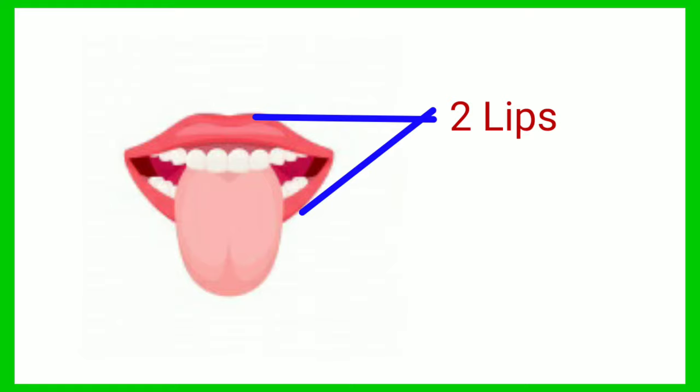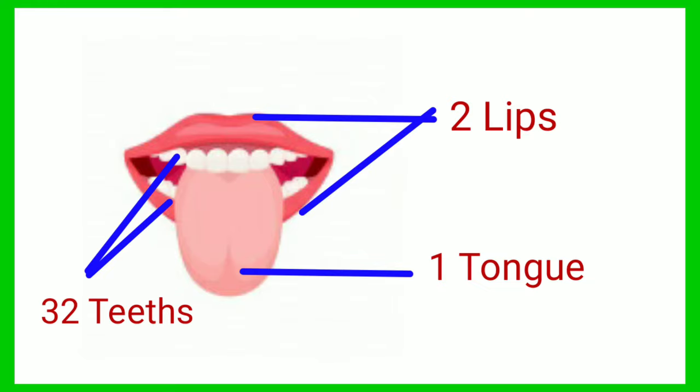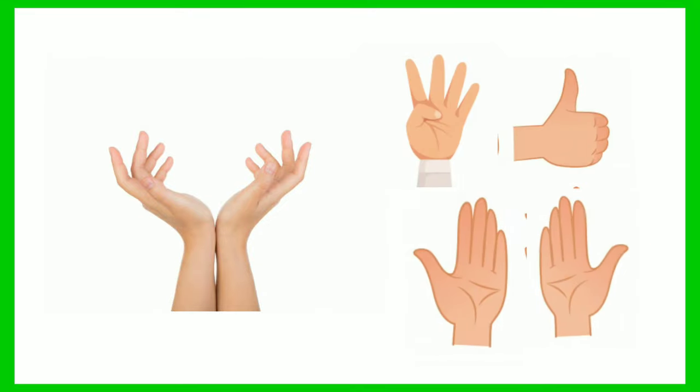Our mouth has two lips, one tongue and 32 teeth. We have two hands. There are four fingers and a thumb in each hand.